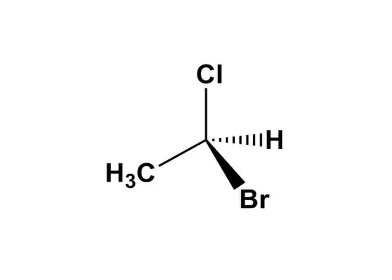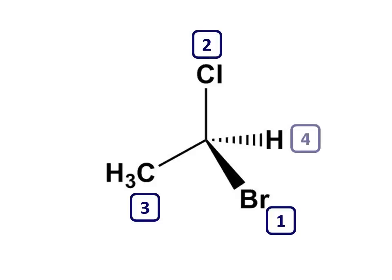We do this based on atomic number, and in this example the priority order is from bromine, highest, to chlorine, to carbon of the methyl group, and then hydrogen as the lowest priority.